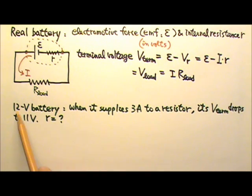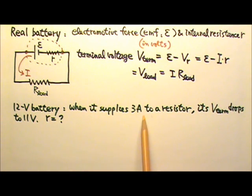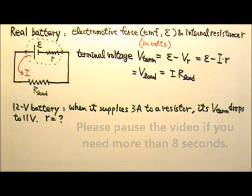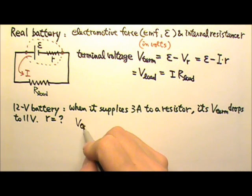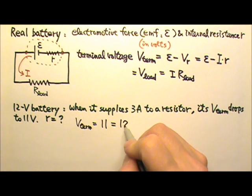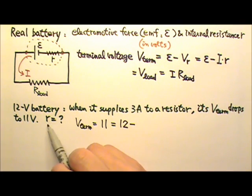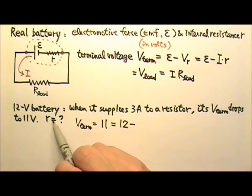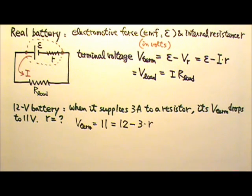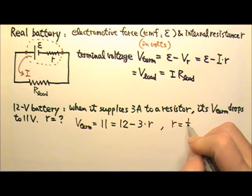Now let's look at this example. A 12V battery's voltage drops to 11V when it supplies 3A of current to a resistor. Find the internal resistance of this battery. The terminal voltage is 11V, which is less than its EMF of 12V because of the voltage drop across the internal resistance. That voltage across the internal resistance is the current times the resistance, I times r. Solving for r, we get one-third of an ohm.